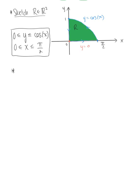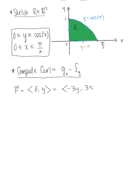The next thing that we need here is to compute the curl, the integrand of our double integral. We know that the curl is defined as the partial derivative of G with respect to X minus the partial derivative of F with respect to Y. We were given this vector field in the plane defined as minus three Y, three X.